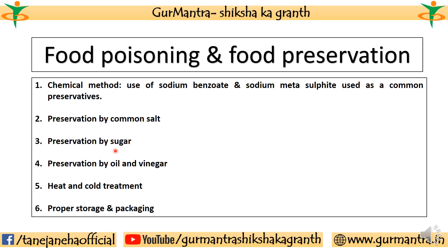Next is preservation by sugar. Sugar is used to preserve things like jams and squashes. The main role of sugar is to reduce moisture. Every microorganism needs a suitable environment — if it gets that environment, it will grow. Sugar reduces moisture, which inhibits bacterial growth, and so we can save our food. Next is preservation by oil and vinegar — very common. At home, ladies use oil or vinegar while making pickles (achar). The reason behind it is to prevent spoilage and stop fungi and bacteria from affecting the food.